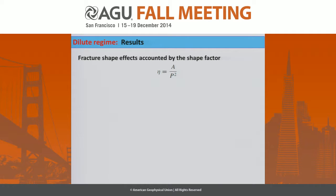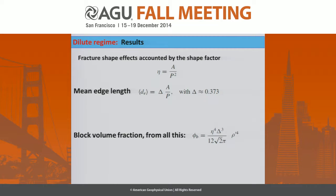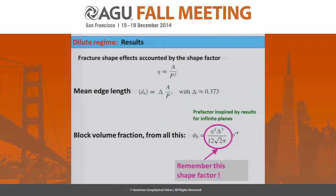Fracture shape effects in the dilute regime can be accounted for by the shape factor eta — the area A over the square of the perimeter P. A key numerical result: if you take the mean edge length of the tetrahedra, it is proportional to A over P, with a coefficient close to one-third, delta. From this we can derive all other quantities. In particular, the block volume fraction phi_b is proportional to rho-prime to the fourth, with a prefactor that involves delta and will turn out to be very useful later.